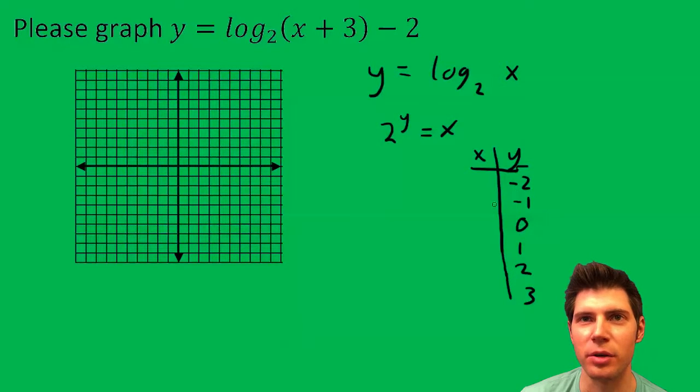So when y is 0, x is 1, because 2 to the 0 is 1. When y is 1, x is 2. When y is 2, x is 4. When y is 3,